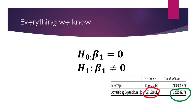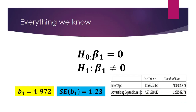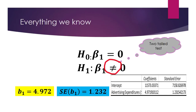Time to write down all the information provided to us. Remember that the null hypothesis is assumed to be true until proven otherwise. Looking at the null hypothesis, we assume the population beta 1 is equal to 0 until proven otherwise. From the Excel output, the estimated sample beta 1 is equal to 4.97, so B1 = 4.97. The standard error is also given in the sample regression output, and it is 1.23. We can tell by looking at the sign of the alternative hypothesis — since it is not an equal sign, it must be a two-tailed test.